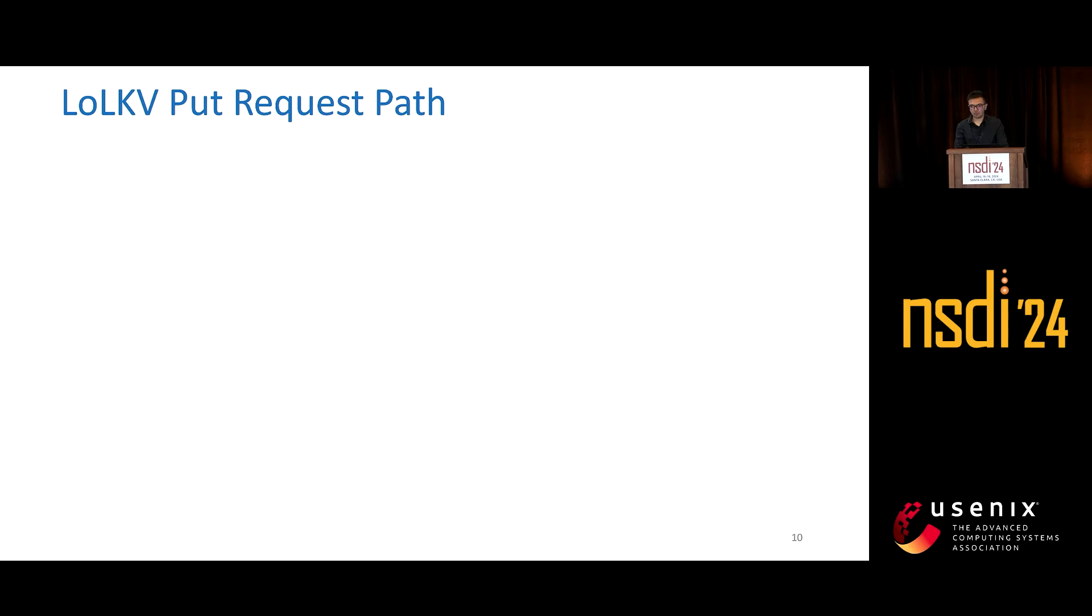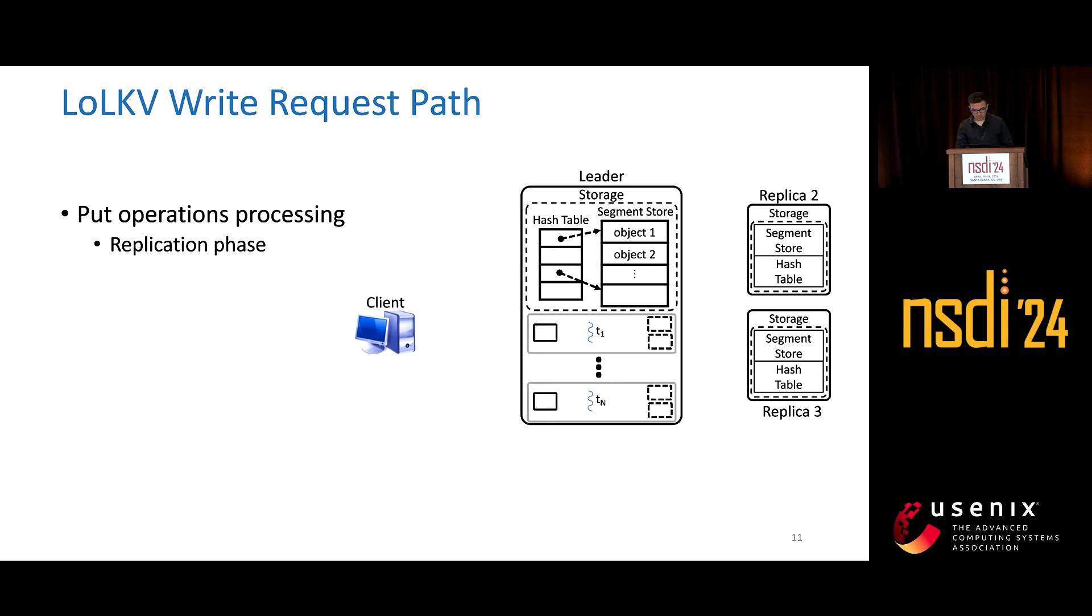Now, let's take a look at how a put request is handled. We have three phases to handle put requests. The first is the replication phase, where when a client sends a request to a thread, it first pushes it into its local segment store on the leader, and then replicates it to the segment stores of followers or replicas.